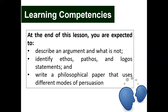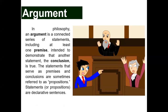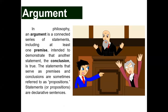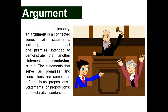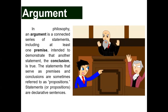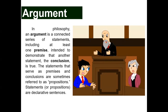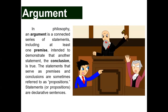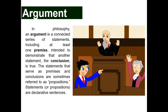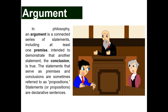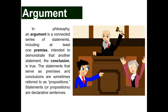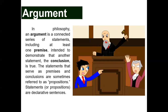Your task is to write a philosophical paper that uses different modes of persuasion. Let's first discuss what an argument is. In philosophy class, an argument is a series of statements including at least one premise. An argument cannot be called an argument if there are no premises. Premises are examples of sentences that demonstrate what to argue. To end a certain argument, there must be a conclusion, and there must be a connection between the premises and the conclusion.